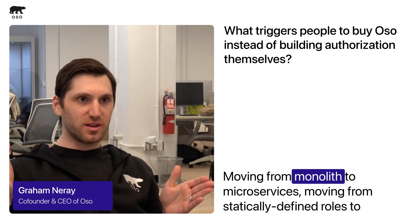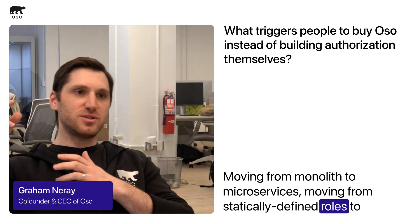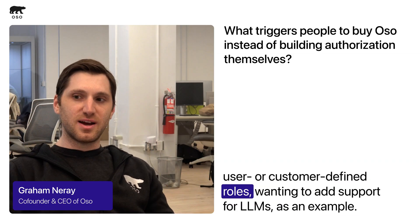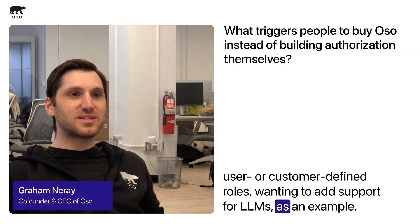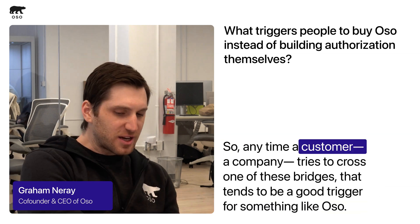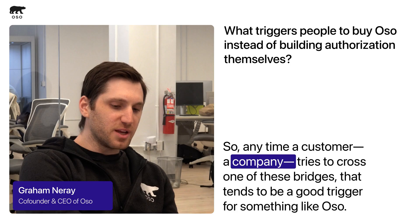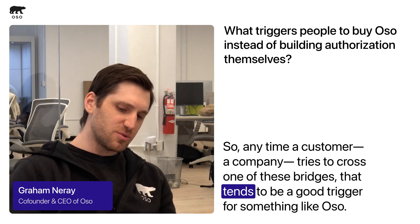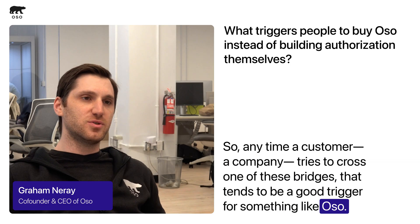And there are a handful of others: moving from monolith to microservices, moving from statically defined roles to user or customer-defined roles, wanting to add support for LLMs as an example. Anytime a company tries to cross one of these bridges, that tends to be a good trigger for something like Oso.